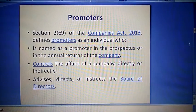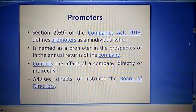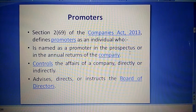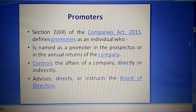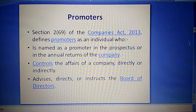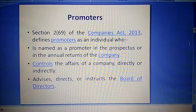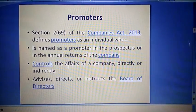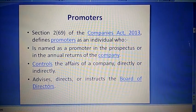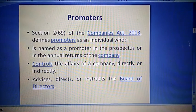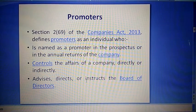Section 2(69) defines promoters as an individual who: first, is named as a promoter in the prospectus or in the annual return of the company — prospectus mein jiska naam likha ho promoter ke taur par, ya company ke annual report mein. Second, controls the affairs of a company directly or indirectly. Next, advises, directs, or instructs the board of directors — jo board of directors ko advise, direct, ya instruction dega.